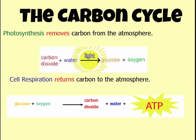Cell respiration, on the other hand, returns carbon to the atmosphere — that's what humans and most animals are doing. In the mitochondria of your cells, we take glucose and oxygen and turn them into ATP, our energy. But as a side effect, we're releasing carbon dioxide back into the atmosphere. So photosynthesis takes CO2 from the atmosphere, and cell respiration returns it.